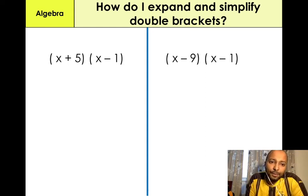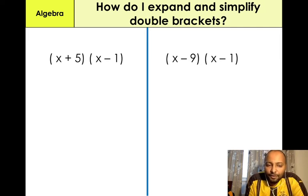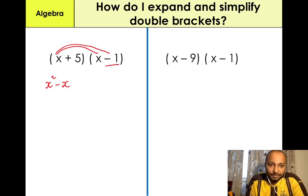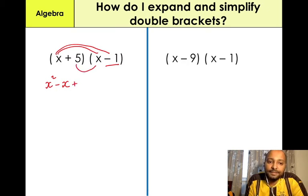In our third example, we have (x + 5)(x − 1). Again, we're going to use the simple FOIL method. X times X gives us X squared. Then we have X times negative 1 — you need to incorporate the negative 1, so that's negative 1X. Next step is the Inner: 5 times X, which is 5X. And then we have 5 times negative 1, which gives us minus 5.